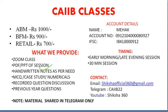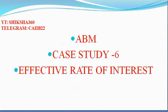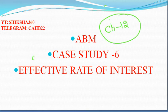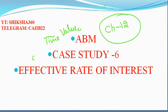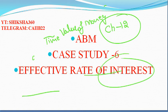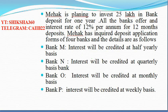Hello students, welcome to Shiksha Through System. Today we will discuss case study number six on ABM. This case study belongs to chapter number 12, which is basically the time value of money. We have discussed this in part two in the theoretical session regarding the effective rate of interest. In this session we will discuss one case study on the effective rate of interest. I request all of you to first pause the video, try to solve the question yourself, and only refer to my solution if you face any difficulty.